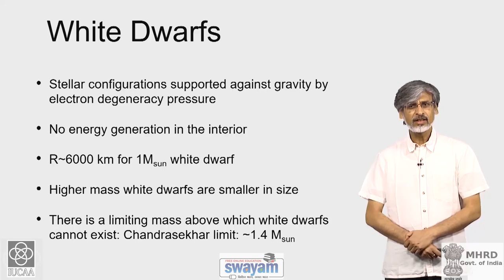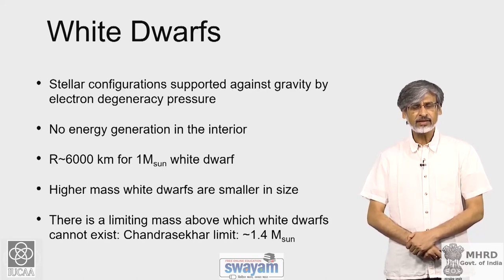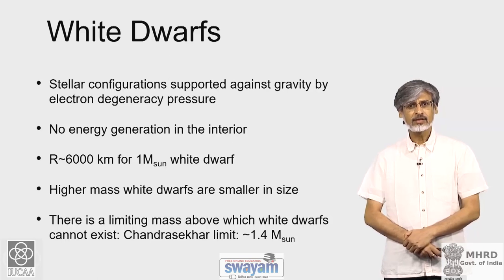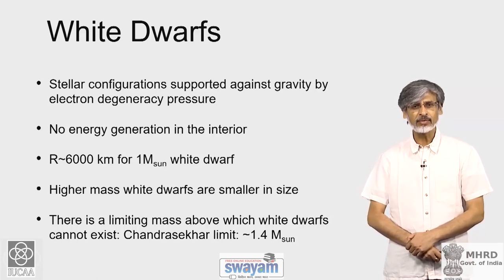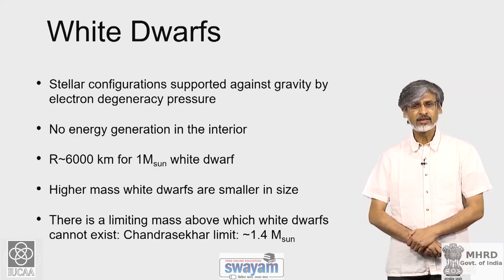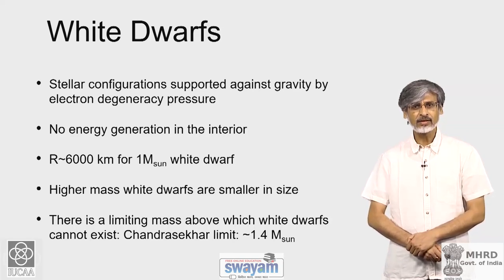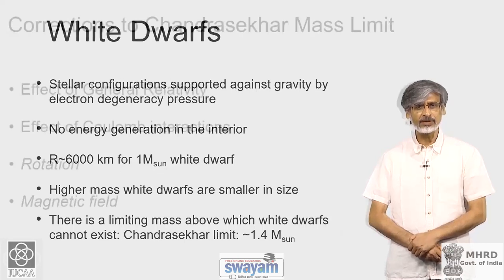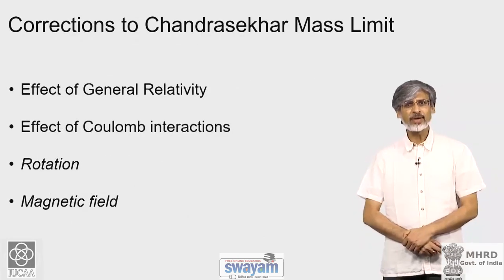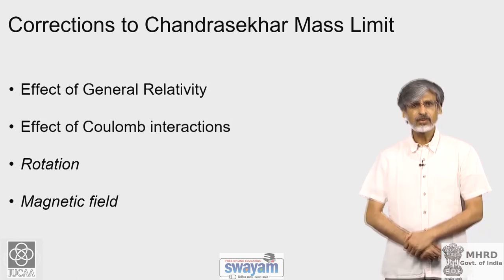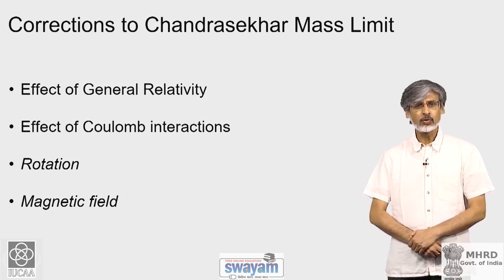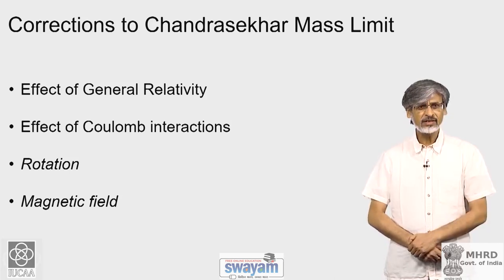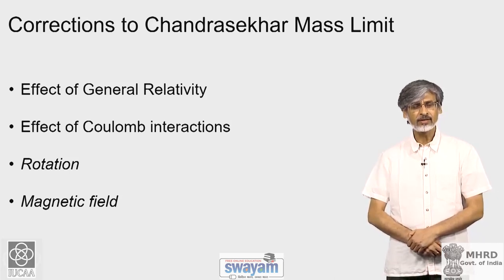In reality, there are other subtle effects which can change the value of the limiting mass a little bit, and these are what we will begin discussing today. Corrections to the Chandrasekhar mass limit may arise, for example, from Coulomb interactions, from rotation, as well as the magnetic field of the white dwarf.